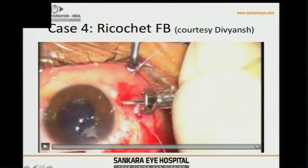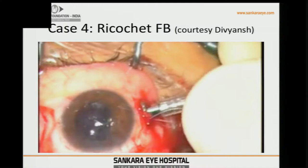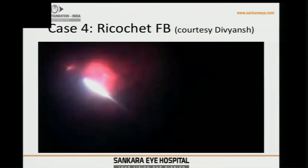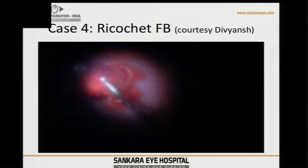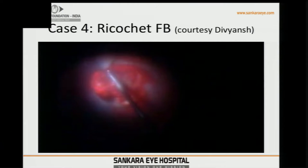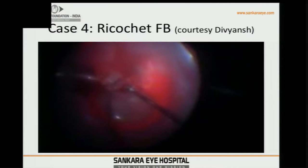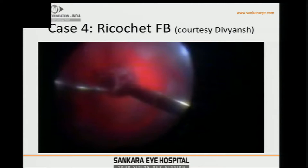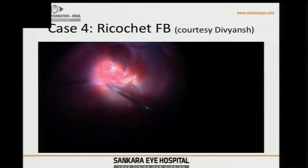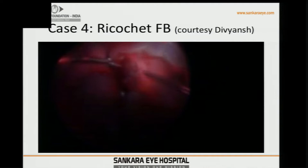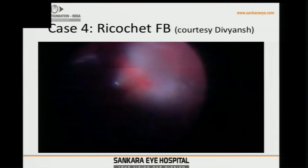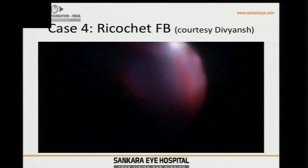We encounter situations where the foreign body hits the retina and bounces back to a different area — this case had a large clot at the posterior pole just below the disc. We thought the foreign body was in that area, but after debulking and bimanual dissection with a chandelier system, there was no foreign body — just a large clot at the retinal level with subretinal extension and a retinal detachment with a large break. The foreign body was then localized in the periphery — it had entered through the cornea, hit near the inferior disc, and ricocheted to the inferotemporal periphery.